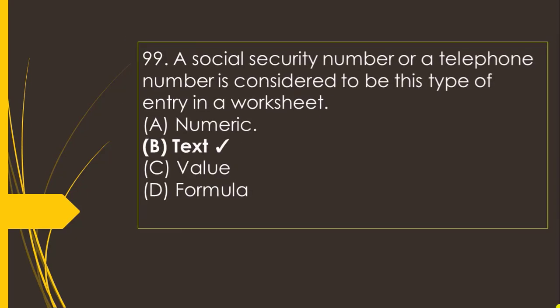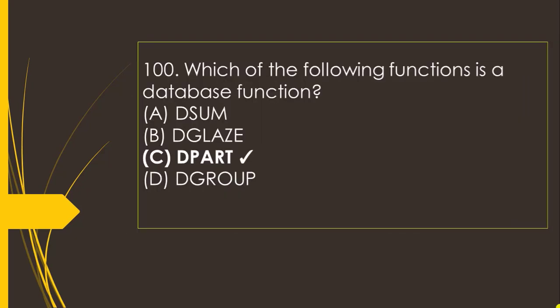A social security number or a telephone number is considered to be this type of entry in a worksheet — the option B: Text. Which of the following functions is a database function? The option C: DBAR D (DAVERAGE/DBAR) is correct.